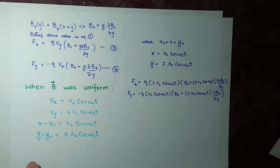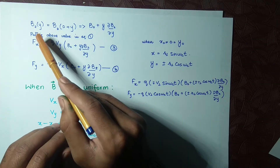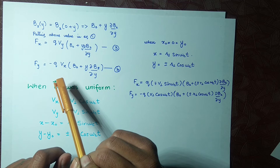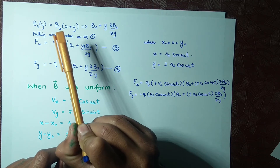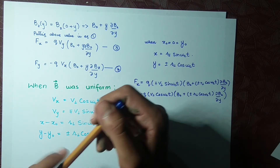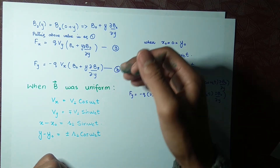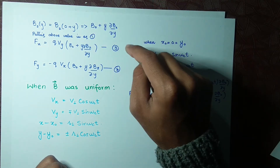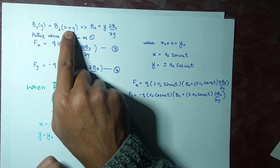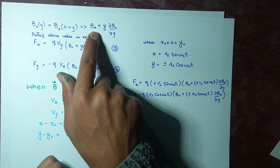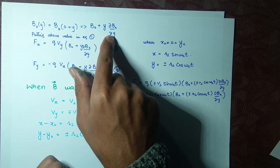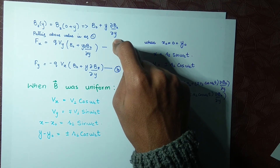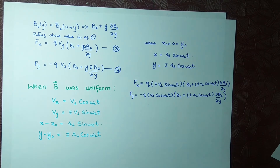Now, since Bz is a function of y, we start with Bz = Bz0 + y·(∂Bz/∂y). Applying the Taylor series expansion — also considering the divergence of B along the y-axis — we get Bz as its initial value plus y times its gradient. The gradient term represents the change in Bz with respect to y, which equals the gradient with respect to y. This is the equation we are looking for.